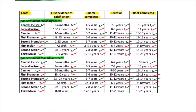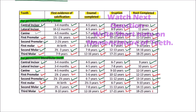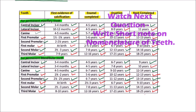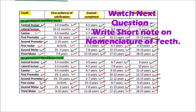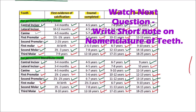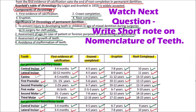For the mandibular third molar, the first evidence of calcification occurs at 8 to 10 years, enamel is completed by 12 to 16 years, eruption occurs between 17 to 21 years, and the root is completed by 18 to 25 years. This is the last tooth to erupt and have its root completed in the mandibular arch. That is all about the chronology of permanent dentition.